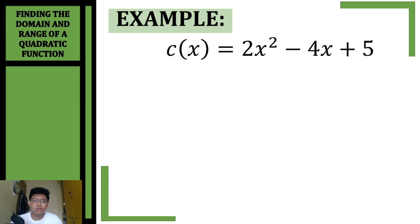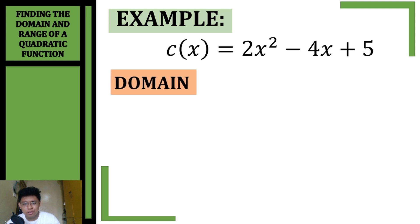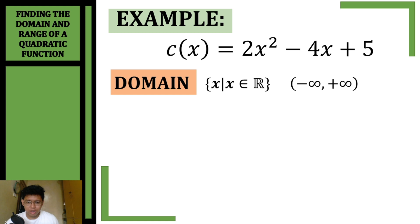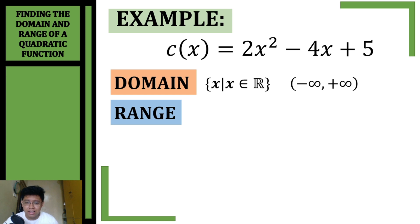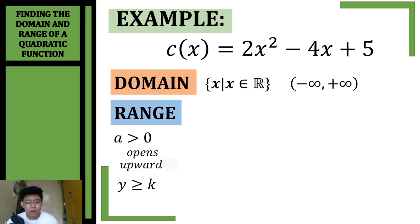For our third example, we'll find the domain and the range of c(x) = 2x² − 4x + 5. The domain of this quadratic function is always any real number: x such that x is an element of real number, or in interval form from negative infinity to positive infinity. For the range, our a = 2, which is positive and greater than zero, so the parabola opens upward.